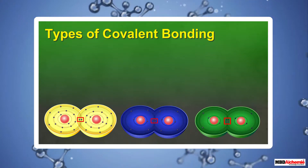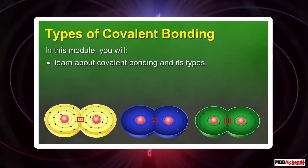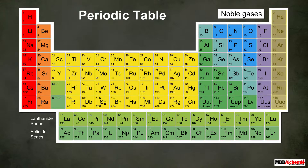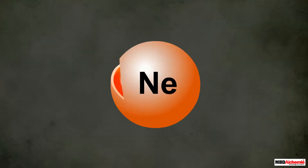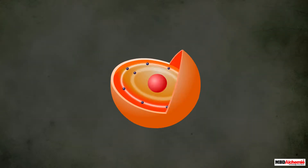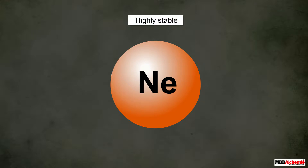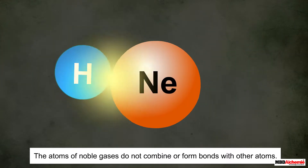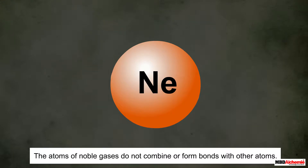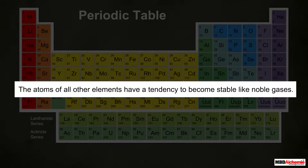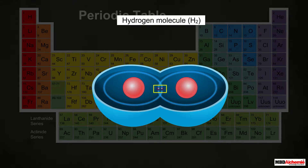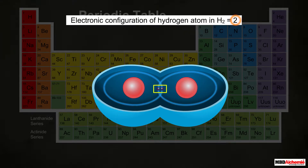Types of covalent bonding. In this module you will learn about covalent bonding and its types. The atoms of noble gases have completely filled outermost shells, which makes them highly stable. Due to this high stability, noble gas atoms have no tendency to combine or form bonds with other atoms. The atoms of all other elements have a strong tendency to achieve the stability that noble gases have.